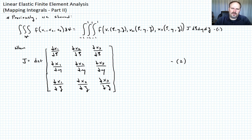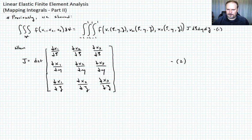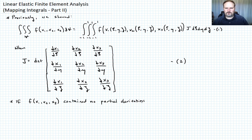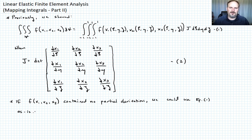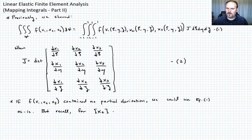So if there were no derivatives in our function f of x1, x2, and x3, we could just go ahead and apply Gauss quadrature now using equation one as is. But if you remember, we're using this to compute the k matrix as well as the mass matrix, and inside the k matrix in particular we have partial derivatives of the interpolation function. So for the stiffness matrix k-sub-e, we do have partial derivatives.